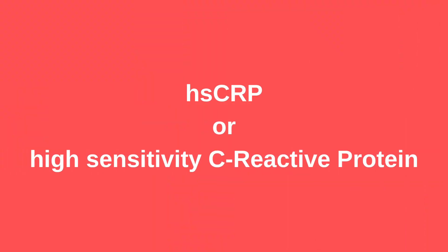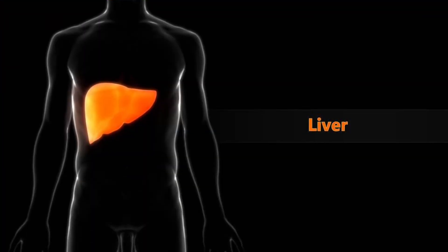Number two: another test you should get done is the hsCRP. hsCRP stands for high sensitivity C-reactive protein. C-reactive protein is a marker of inflammation in the body — it is released by our liver and rises when you have inflammation in your body. If your endothelium is damaged, it causes inflammation in the body as the body starts fighting the damage, sending white blood cells to the inflamed area. Inflammation increases oxidative stress, which leads to oxidation of the small dense LDL particles after they penetrate the endothelium.